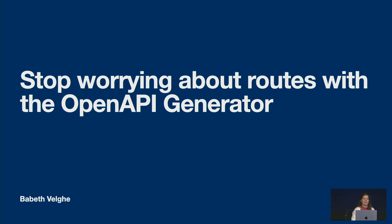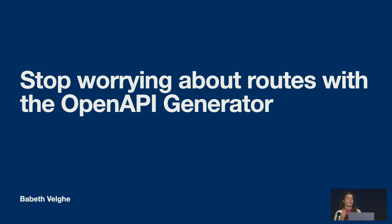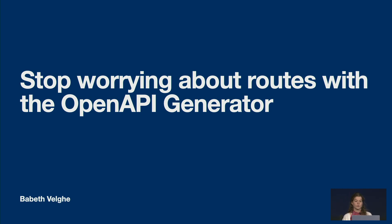Hello everyone. Imagine building a full-functioning backend service in just minutes, while using minimal boilerplate and rock-solid type safety, all while cutting down bugs and saving hours of coding. Sounds ideal? Well, that is exactly what you should be able to do with the Swift OpenAPI generator.